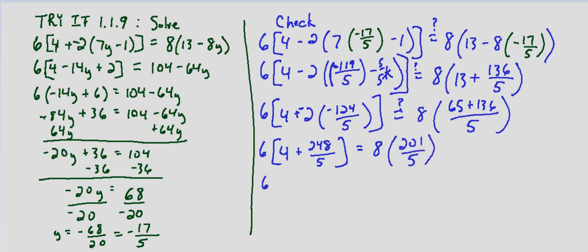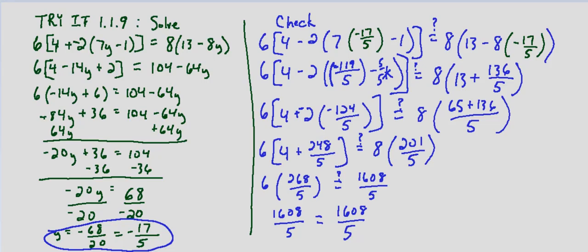So this ends up being 6 times 4 times 5 is 20. So this is going to be 20 plus 248 over 5 if I put them over a common denominator. So 268 fifths. And again we still don't know that they're equal. We're wanting to check that. So and then 8 times 201 fifths is 1,608 fifths. And then 6 times 268 that also ends up being 1,608. We're still over 5. So they do end up being equal. And this verifies that y equals negative 17 fifths is the solution to our original equation.